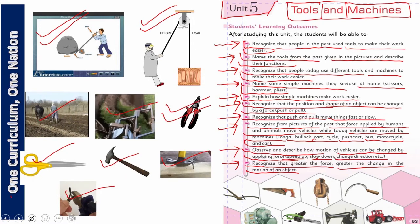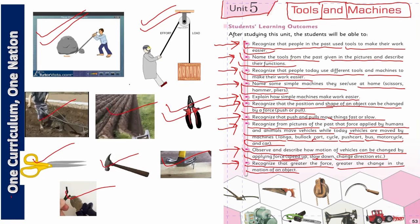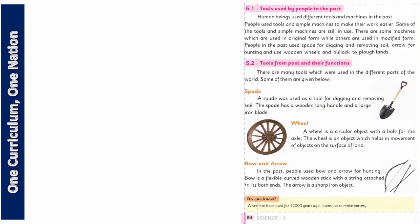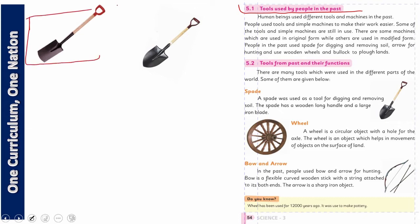My dear students, we will go through these simple machines in this chapter in detail. Let's see the first tool of this chapter - tools used by people in the past. Today we are going to study all the tools which were used by the people in the past. What did people in the past use and in what way? Have a look at what comes immediately to your mind.